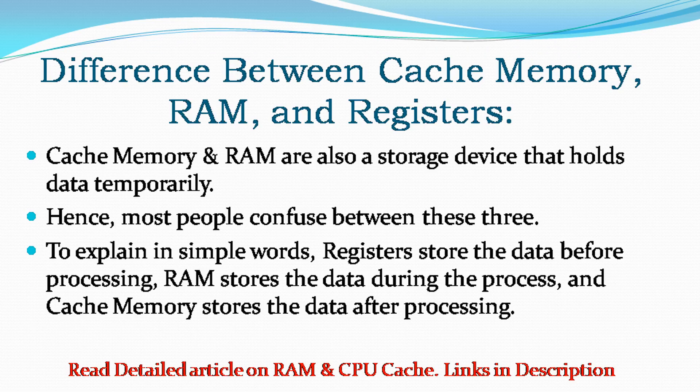Difference between cache memory, RAM, and registers. Cache memory and RAM are also storage devices that hold data temporarily, so most people confuse between these three. To explain in simple words: registers store the data before processing, RAM stores the data during the process, and cache memory stores the data after processing.